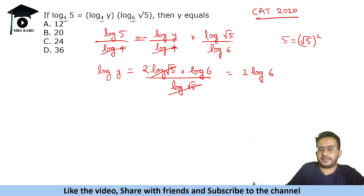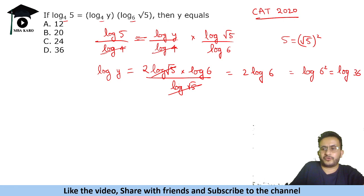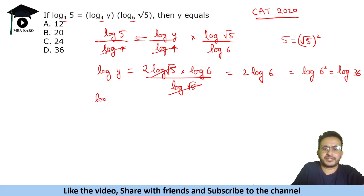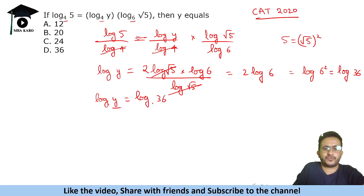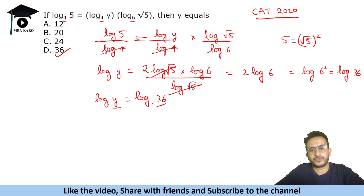2·log 6 equals log 6² = log 36. So log y = log 36. Since the base is the same (natural base 10), we can conclude y = 36. This was a straightforward question — if you know the change of base property, you can solve it quickly in an examination.